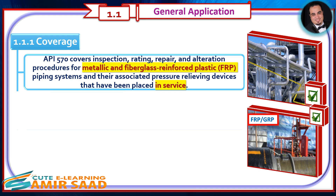General Application Coverage: API 570 covers inspection, rating, repair, and alteration procedures for metallic and fiberglass-reinforced plastic (FRP) piping systems, and their associated pressure-relieving devices, that have been placed in service.